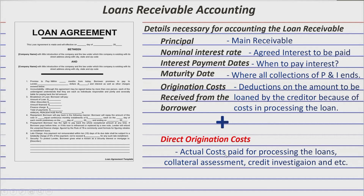In summary, any amount you have given up — like the proceeds given to the debtor and the direct origination cost you as the creditor paid or incurred — must be added to the loan receivable account. While any amount received from the borrower, like origination costs received from the borrower and future payments of interest and principal, shall be deducted from your loan receivable account. Note that this applies only to direct origination costs. Indirect origination costs are expensed immediately and should not be added to the loan receivable account.